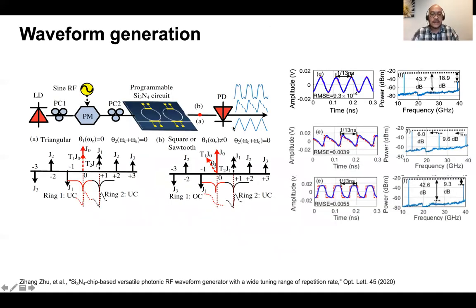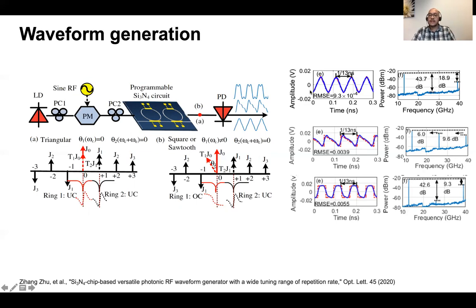This spectral shaping technique can also be exploited to synthesize RF waveforms. In collaboration with the Egleton group in Sydney, ring resonators are used as complex filters to apply correct coefficients at different frequency components of the modulated signal, which are then summed at the photodetector to create waveforms ranging from triangular, sawtooth, to square waveforms.